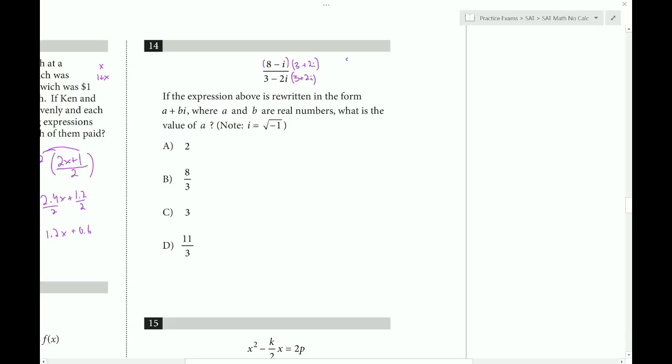So 8 times 3 is 24. Inside is minus 3i. Outside is plus 16i. And then the last is minus 2i squared. So that would be 24 plus 13i minus 2i squared. Now for the denominator. We get 9. And we get minus 6i plus 6i which cancels out. And then we get minus 4i squared.